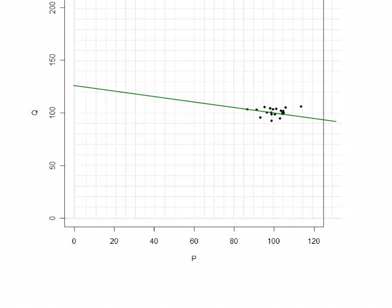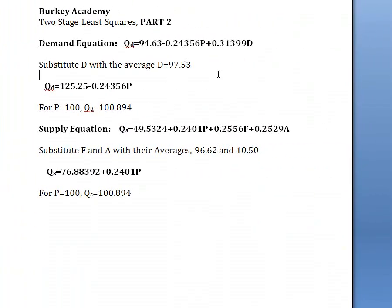Now let's do exactly the same thing with supply. The supply equation, if you go through two-stage least squares, is 49.5 plus 0.24 times price plus 0.255 times last year's price plus 0.25 times the year. Doing the same kind of procedure, if we substitute the last year's price with the average and the year with their averages, we end up with this simple equation that we can graph in two dimensions here.